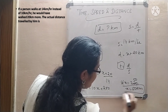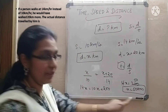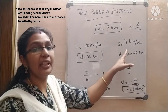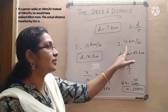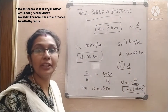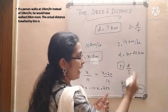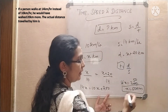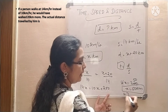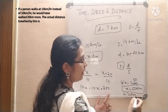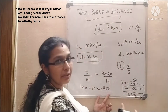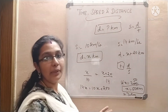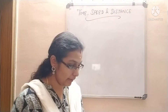So X = 50 kilometers is the original distance he actually covered. If the question asked how much he covers at 14 km/h, we substitute: 50 + 20 = 70 kilometers. But since the question asks for the actual distance, X = 50 kilometers is the answer.